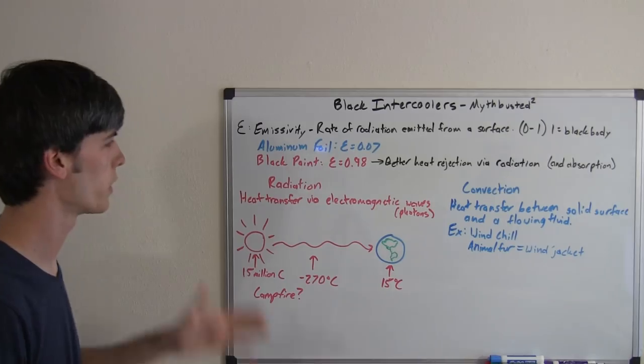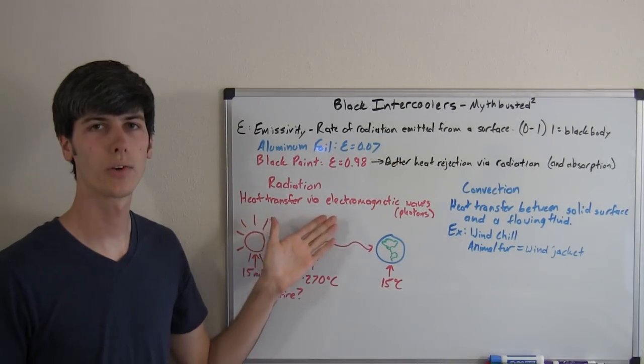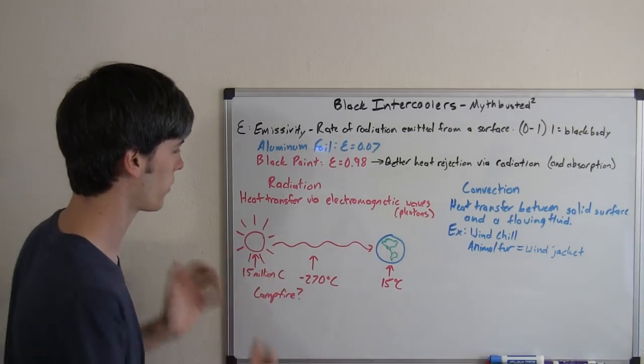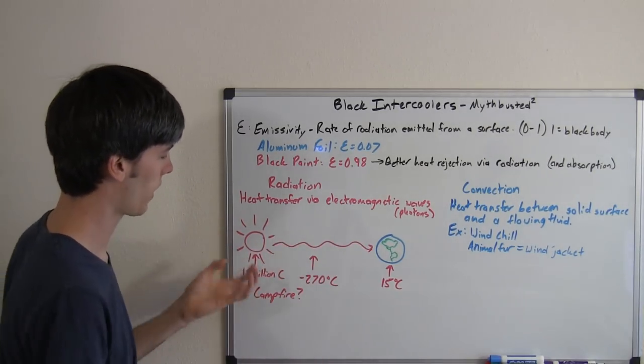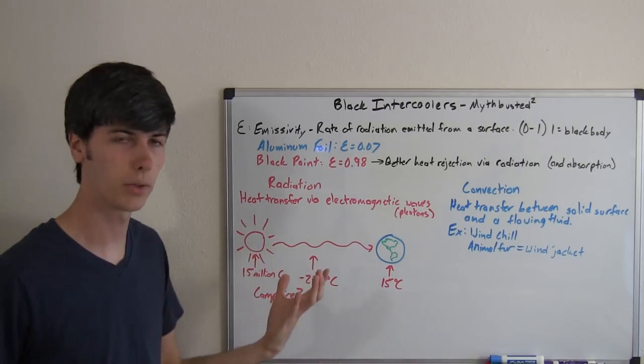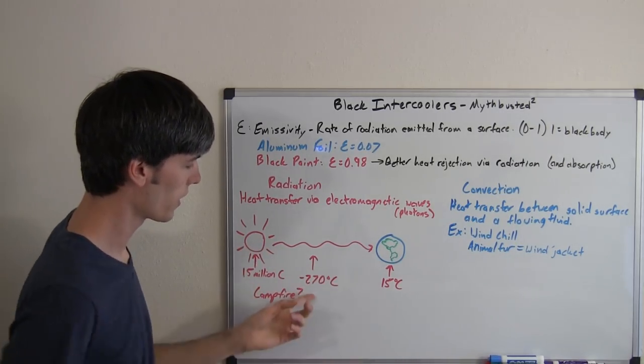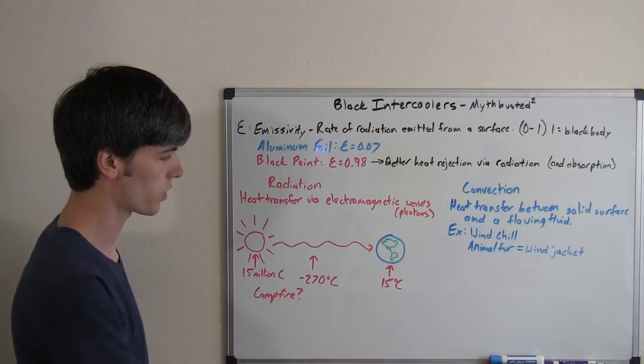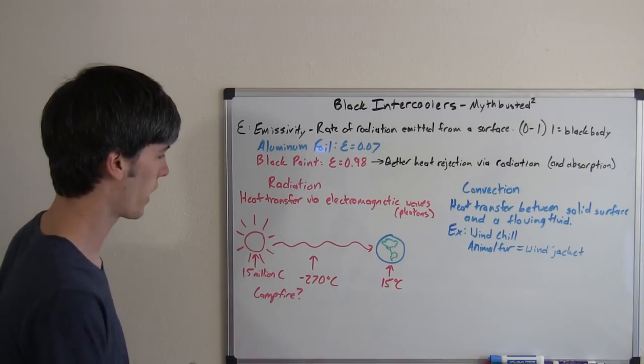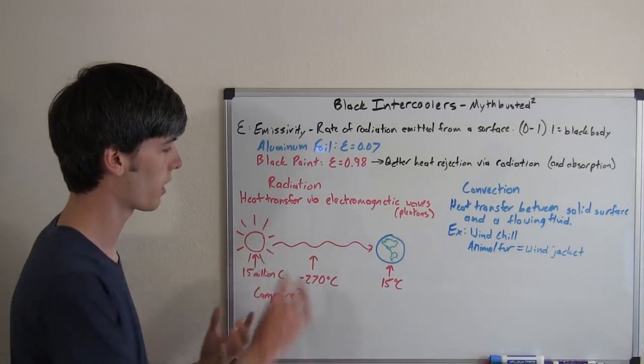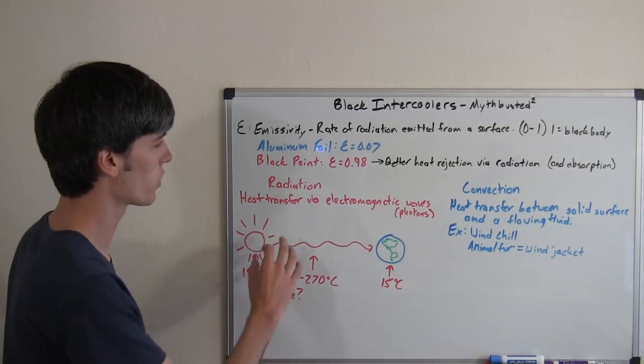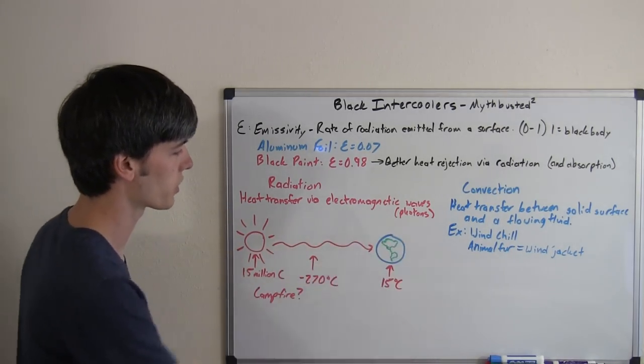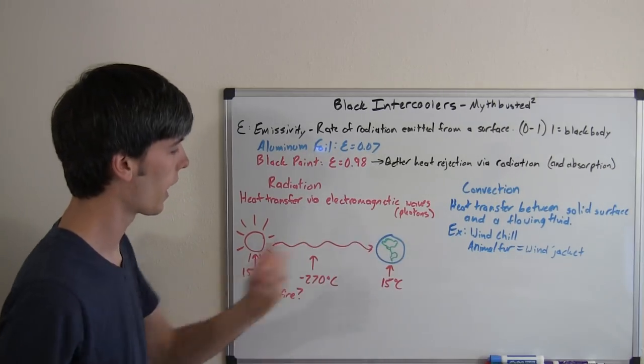So what's the difference between radiation and convection? Radiation is heat transferred via electromagnetic waves or photons. A great example is the sun. The sun heats the earth via radiation. The sun has an internal temperature of 15 million degrees C. The space in between the sun and the earth is at negative 270 C. And yet our earth has a surface temperature, an average of 15 C. So how does that happen? Well, radiation. It doesn't matter that there's a vacuum in between. Radiation is passed via electromagnetic waves, which can pass through anything, and they'll heat up objects that they hit. So they run into the earth and they heat up the earth.